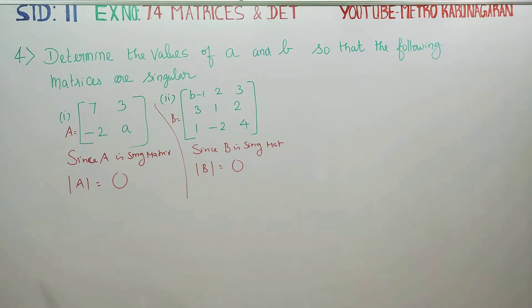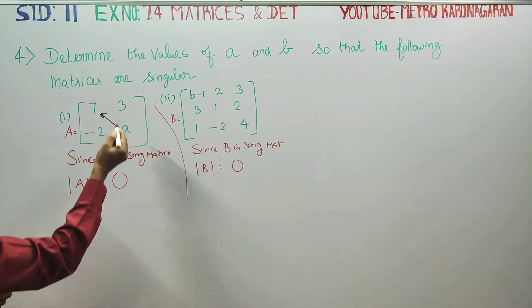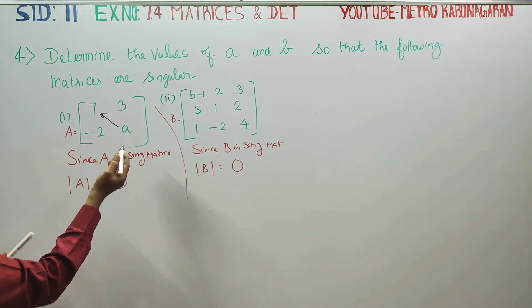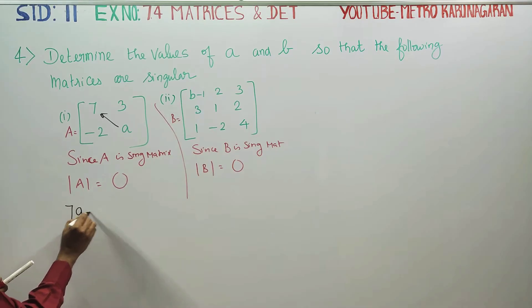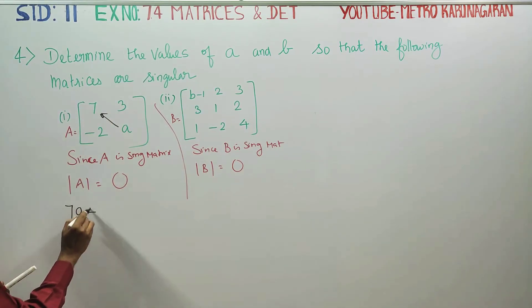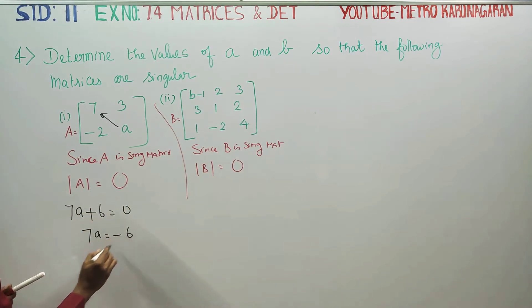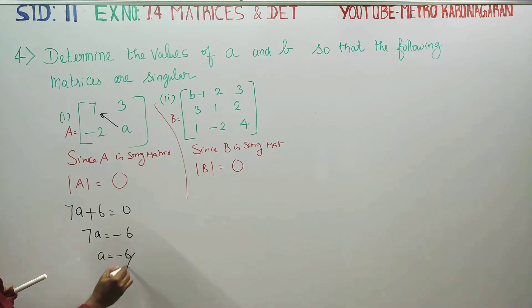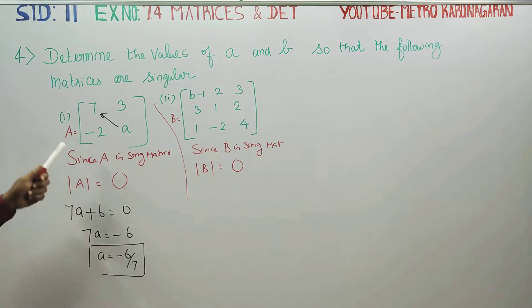The determinant of A is equal to minus 6 by 7. That is the value. So the value of A is equal to minus 6 by 7.